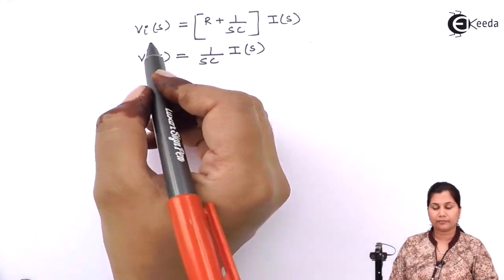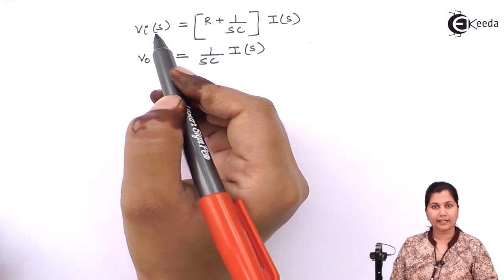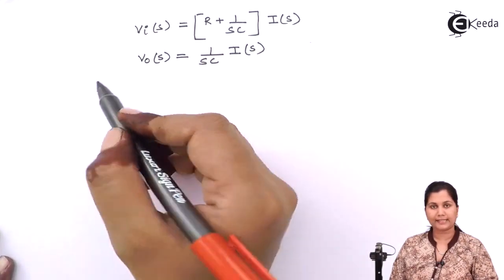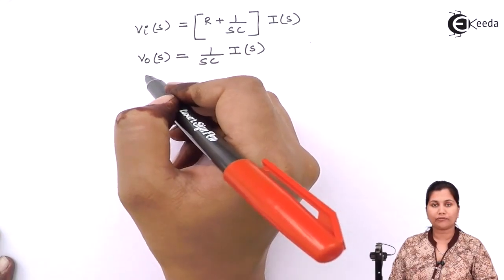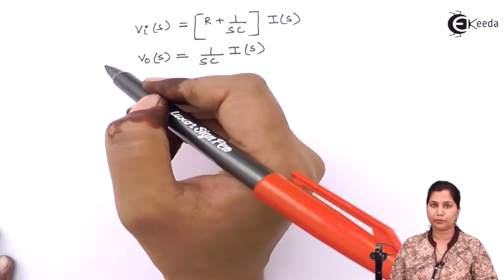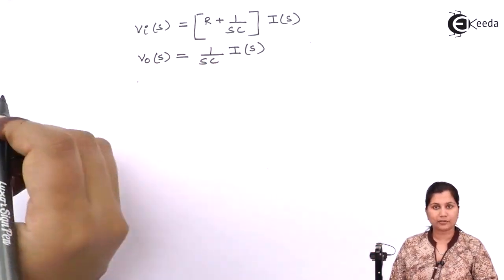Now, we have to take VIS as our input voltage and V0S as our output voltage. So we have to take the ratio of the Laplace transform of the output and the input. That is the transfer function.